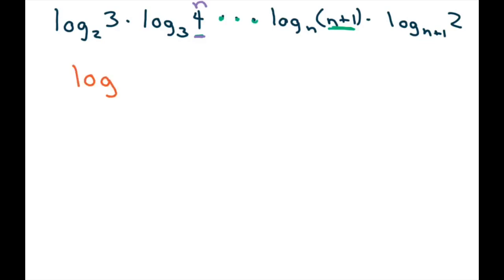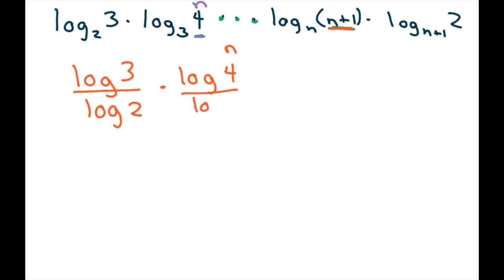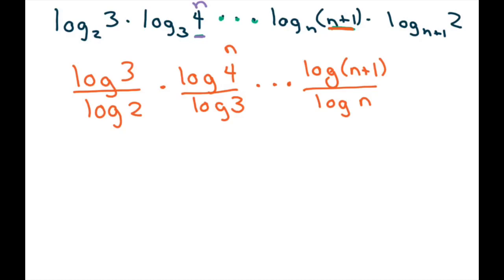So let's go ahead and use our formula. We have log 3 divided by log 2, times log 4 divided by log 3 — which is really like our previous term compared to this term — dot dot dot, log(n+1) divided by log n, which is whatever the previous term was. In this case it's 4, times log 2 divided by log(n+1).